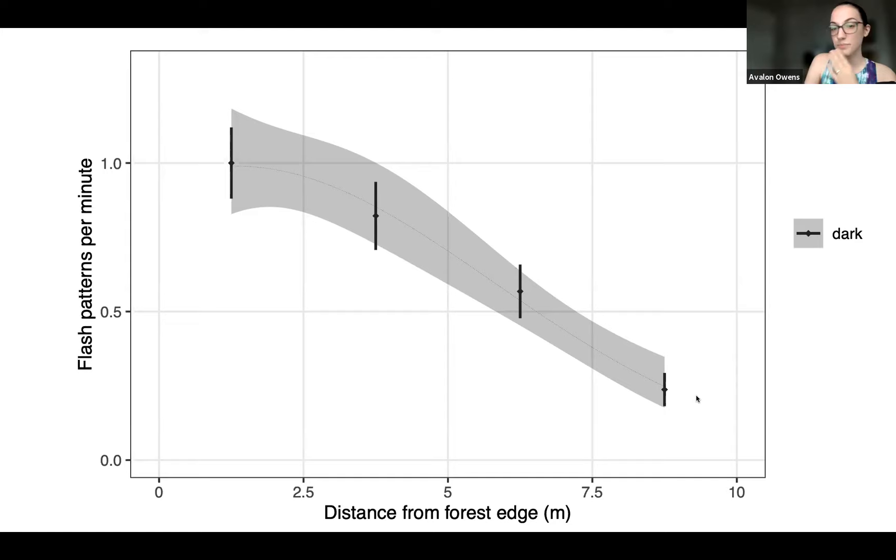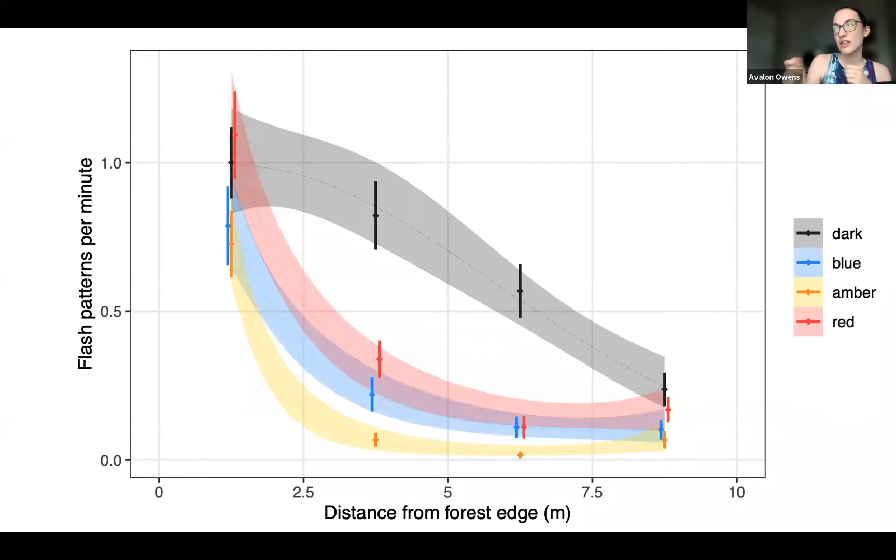When we added light, we saw something very different. An amber light just absolutely destroyed the firefly flash activity. We very rarely saw any fireflies flash under amber light. The only ones that did were really right up next to the forest edge, maybe where it was a bit shadier, kind of nice, a little bit darker, and they could hide a bit from the light. And then the red and blue colors of light fell in the middle. We couldn't really tell the difference between them. They were definitely better than amber, but worse than dark. So that's the first half of the experiment. How does light affect fireflies? It seems to have an impact.